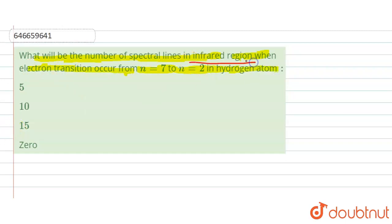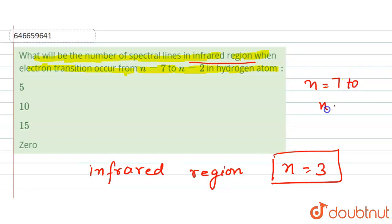So here we are given the infrared region, and for the infrared region, the lower orbital is 3, n equals 3. It means that we have to know the transition from n equals 7 to n equals 3.